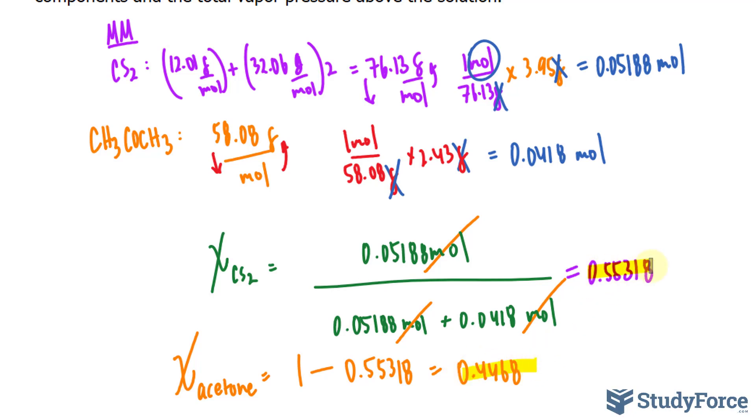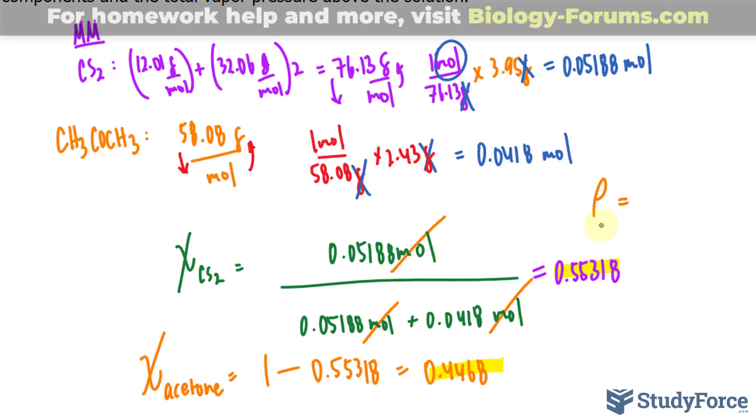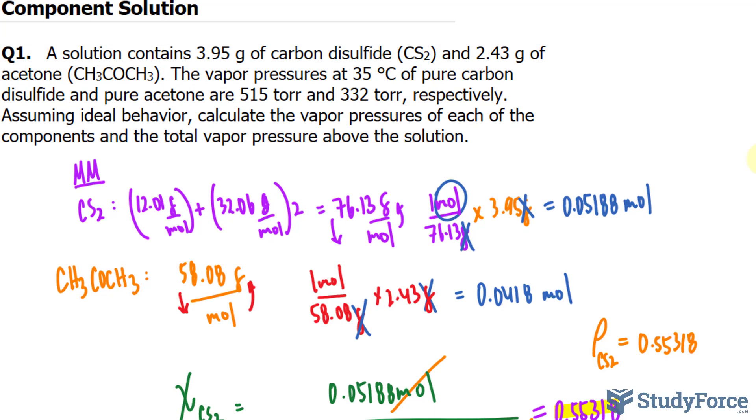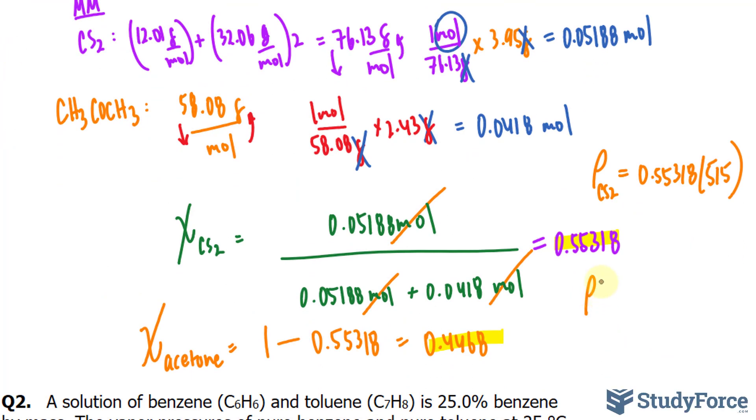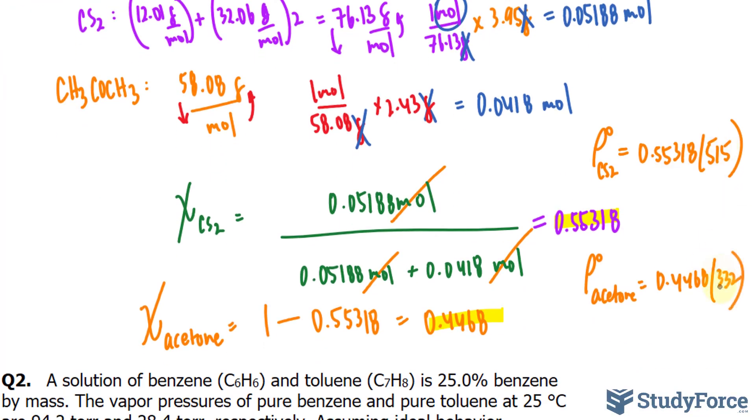Let me highlight these, and now I can use Raoul's law. If you recall, Raoul's law is the following, where the pressure is equal to the mole fraction. I'll write down the pressure of CS2 is equal to the mole fraction, multiplied by the pressure for CS2 which is 515. And I can find the partial pressure of acetone the same way, where I take 0.4468 and multiply it to a pressure of 332. And those are both in torr.